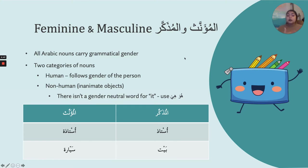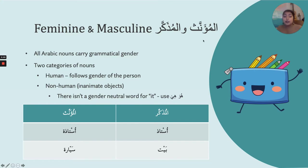So if I'm describing someone who's a man, then the nouns I'm going to use are going to be al-mudakkar — masculine. The adjectives I use will also be al-mudakkar. If I'm describing someone who's a woman, the nouns and adjectives I use are going to be al-mu'annath. Now, there are a lot of conversations happening right now in the Arabic linguist world about gender-neutral terms, because there isn't a gender-neutral pronoun in Arabic.